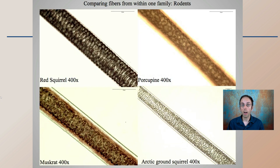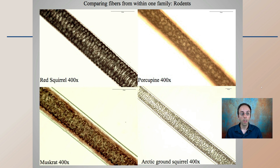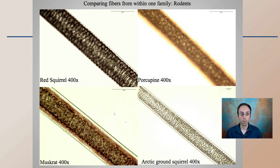Continuing on to comparing fibers within one family — these are all classified under the rodent family. We can still see that there are some differences, maybe not as starkly different as the last image, but definitely when matching an unknown sample up to some knowns, we could see where we could at least eliminate some potential options.